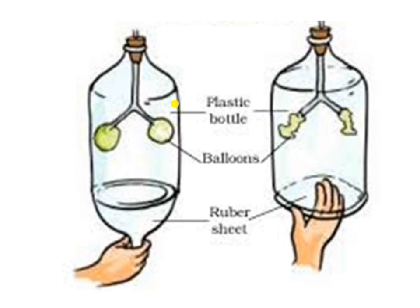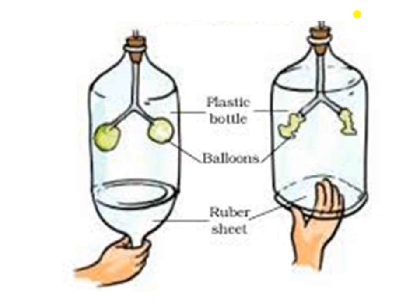In this activity, you have to understand the expansion of the lungs. Pull the rubber sheet from the base downward and watch the balloon. Then push the rubber or plastic sheet upward and observe the balloon. Did you see any change in the balloon? What do the balloons represent in this model, and what does the rubber sheet represent? Explain the mechanism of breathing.